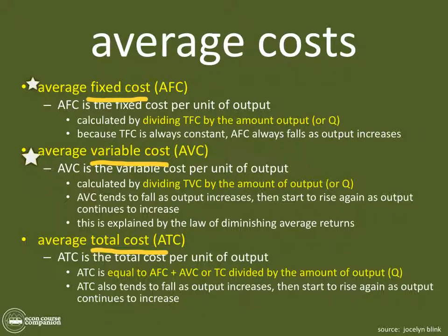ATC rises because of the relationship between marginal and average. As you add one more unit of output, if that marginal thing makes you more efficient, the average is going to be pulled down. If the next thing you add is above the average, the average goes up; if it's below, the average goes down. Think about 10 tests in school: if your 11th test score is higher, your average goes up. The opposite if it's a worse grade.